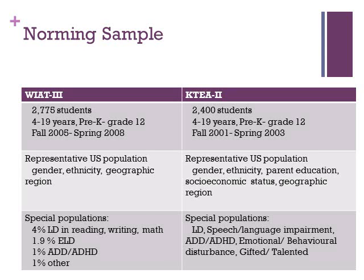The WIAT-3 is a norm-referenced measure. The norming sample used to create standards included 2,775 students ranging from pre-kindergarten to grade 12. Normative data was collected from fall 2005 to spring 2008, with the sample selected to match the American population for gender, ethnicity, and geographic region. Data were also obtained from special populations: 4% had identified learning disabilities in reading, writing, or mathematics; 1.9% had expressive language disorder; and 1% were identified with attention deficit or hyperactivity disorder.